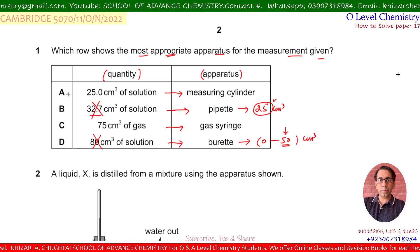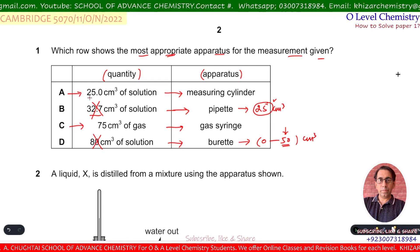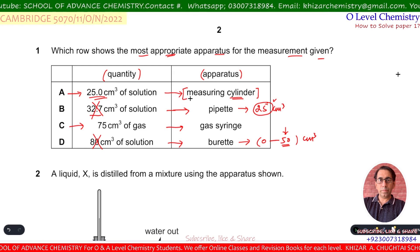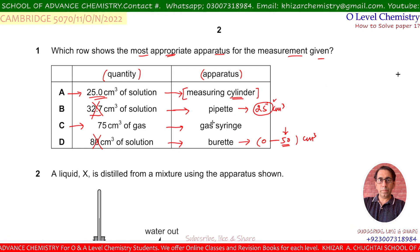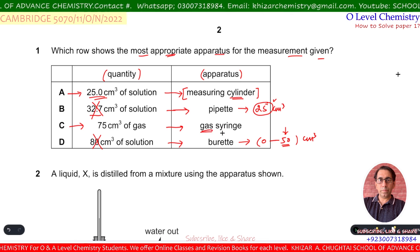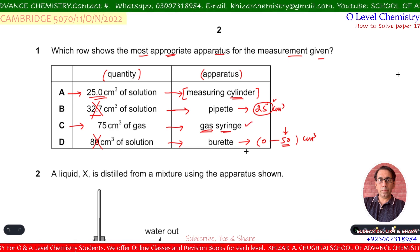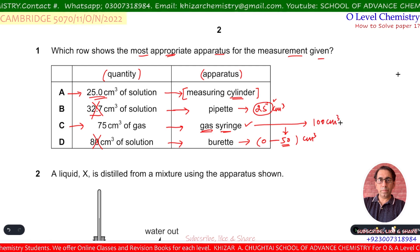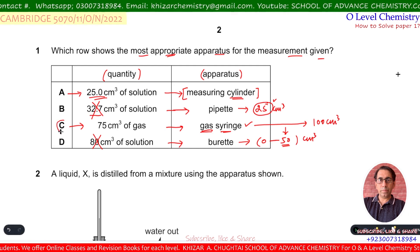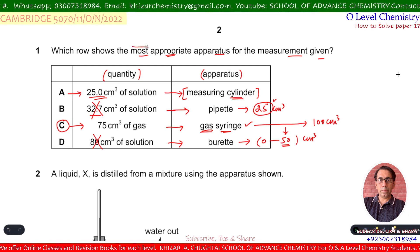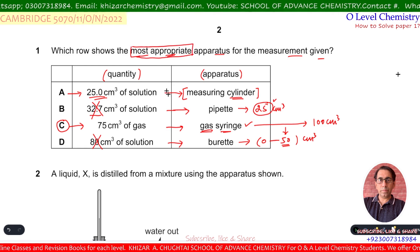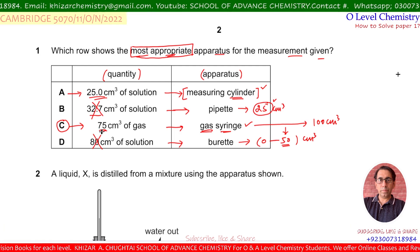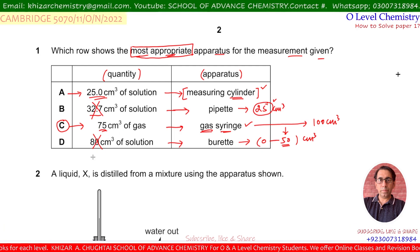The two remaining options are A and C. A measuring cylinder with 25 cm³ of solution is not the most appropriate apparatus. A gas syringe is more appropriate; a normal gas syringe can measure up to 100 cm³ of gas and it can measure 75 cm³ of gas. So C is the correct option.